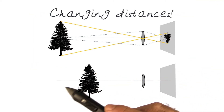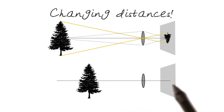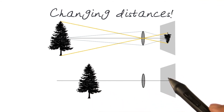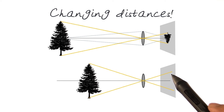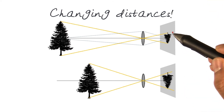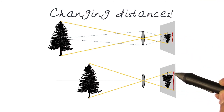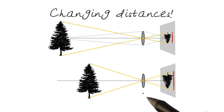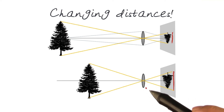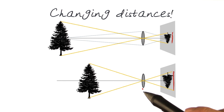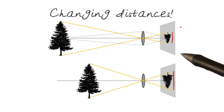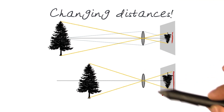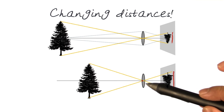Now let's look at what happens if I move the tree inwards. Same lens, same situation, same location of the sensor. If you draw the rays of light and do the projection again, you will notice that this time the tree is bigger. This tree is smaller, and this tree is much bigger. It's closer to the sensor, therefore it appears to have more size and appears larger. This demonstrates that by changing the distance of the object to the lensing system, we can see closer or farther objects.